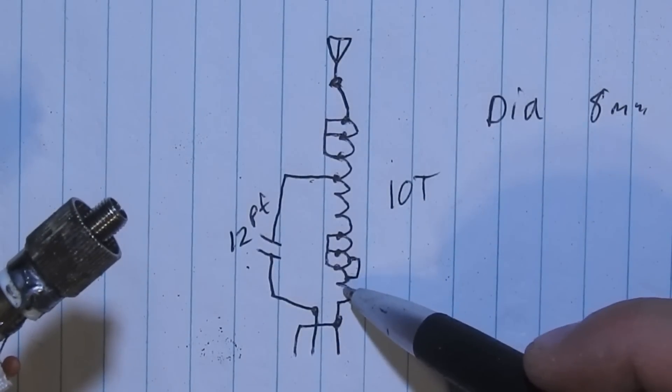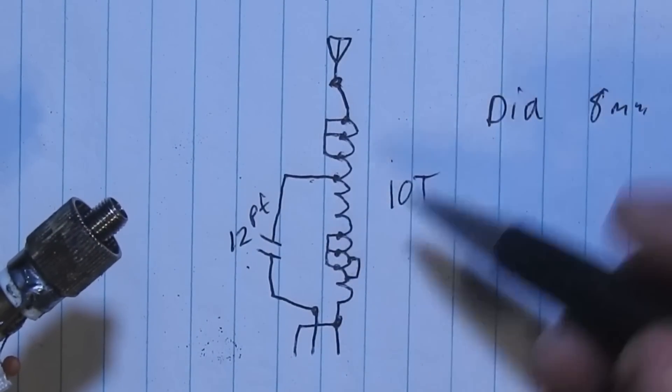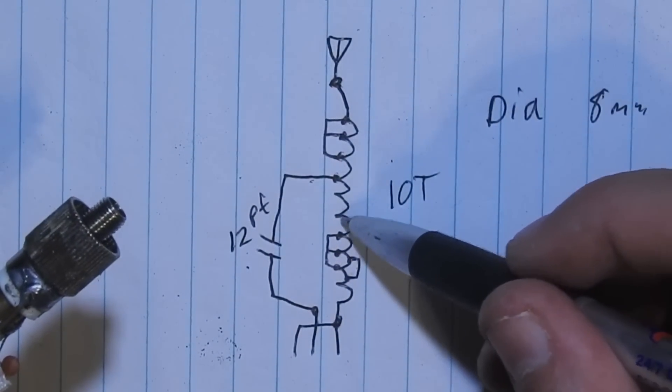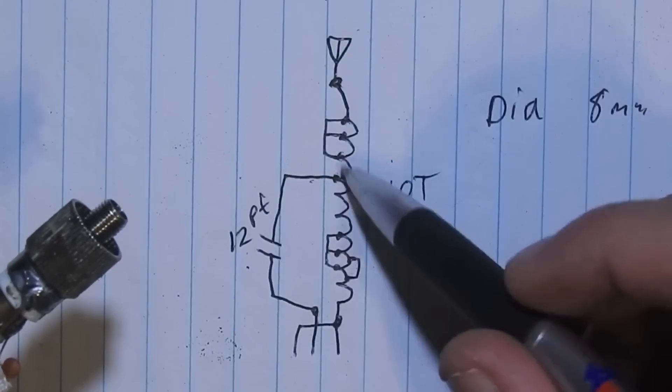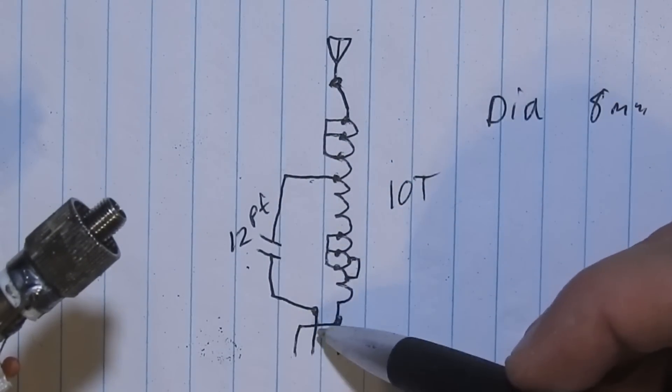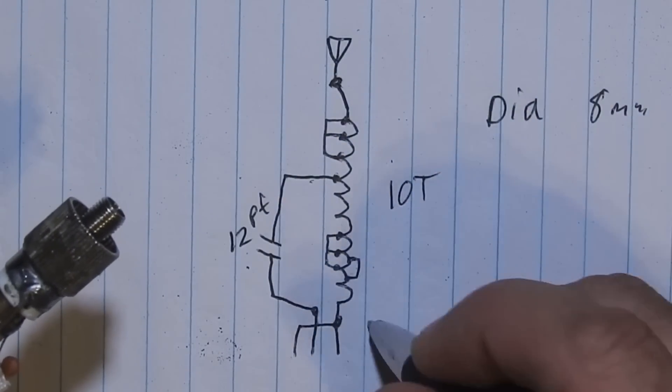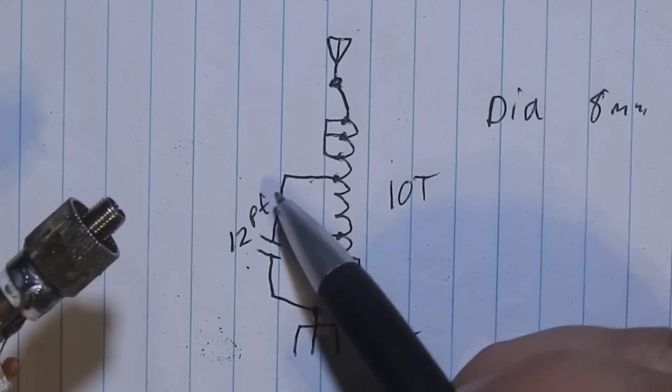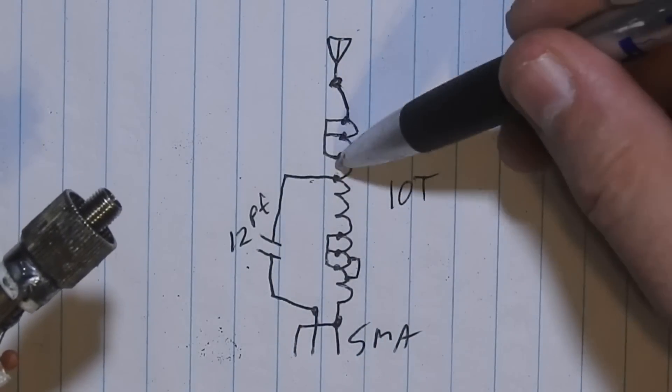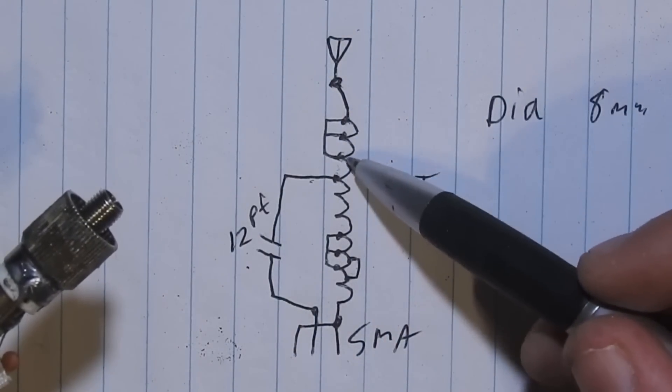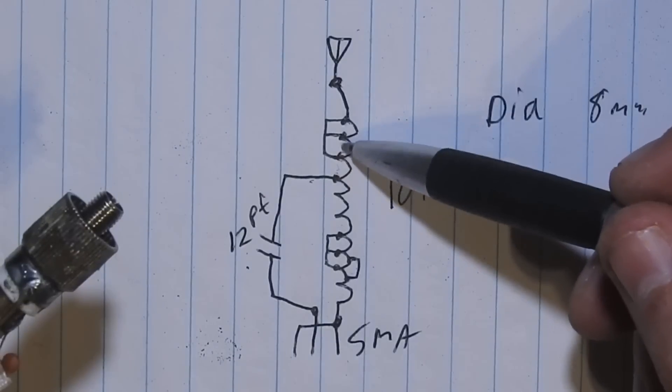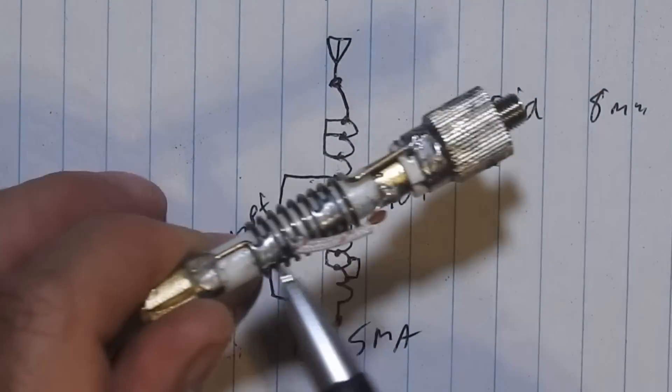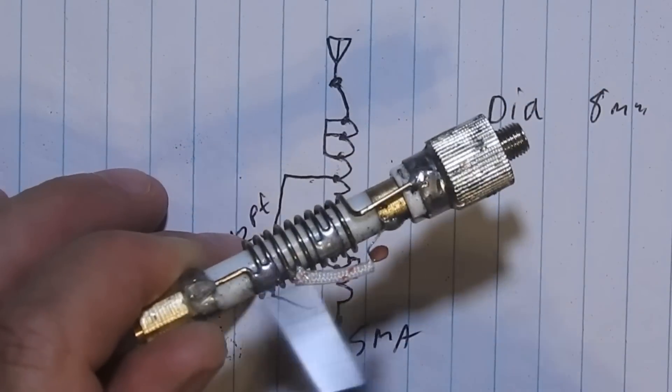So we got one turn, a big shorted area, two, three, four turns, and the capacitor is tapped in. It's a 12 picofarad capacitor from the center pin of the SMA. It's tapped here, and then we have one more turn, and then the last three are shorted before we get to the antenna.